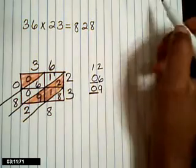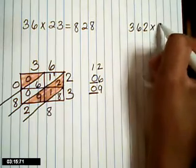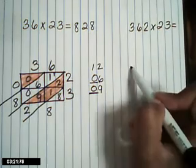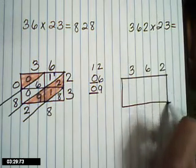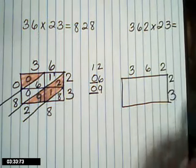I'm going to help you set it up, but it's going to be your job to solve it. So we're going to write a 3, a 6, and a 2. We're going to kind of spread them out. Then we're going to draw a big rectangle. Then down the side, we're going to put our 2 and our 3.